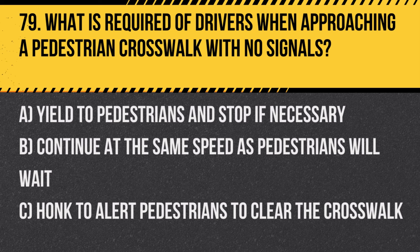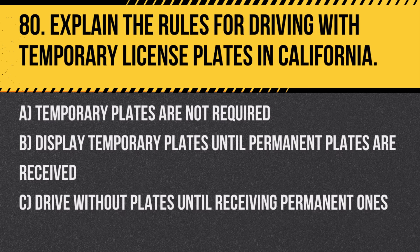Question 79: What is required of drivers when approaching a pedestrian crosswalk with no signals? A. Yield to pedestrians and stop if necessary. B. Continue at the same speed as pedestrians will wait. C. Honk to alert pedestrians to clear the crosswalk. Answer: A. Yield to pedestrians and stop if necessary. Drivers must always give the right of way to pedestrians at crosswalks.